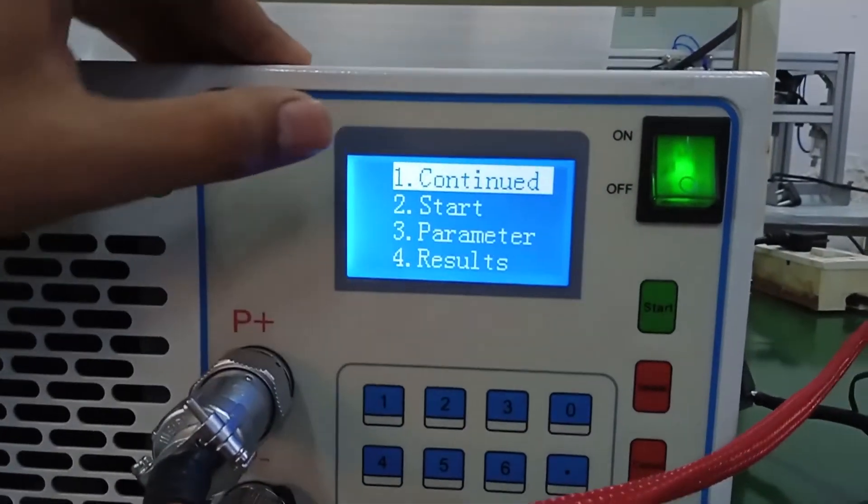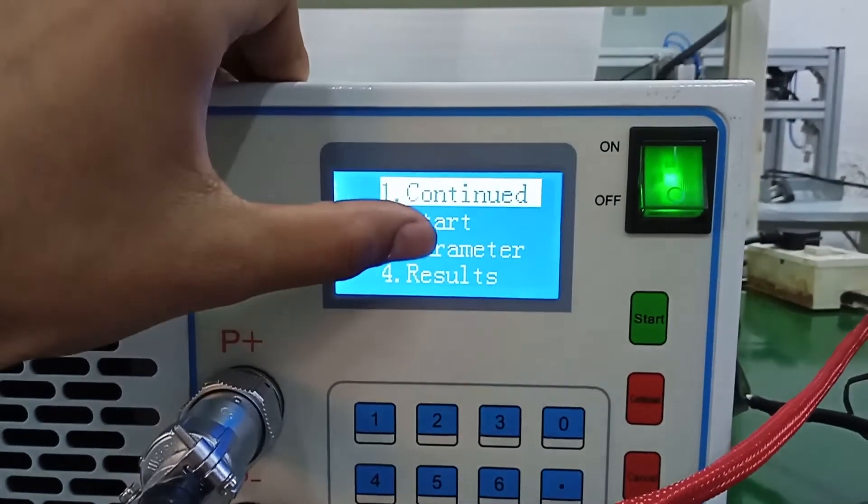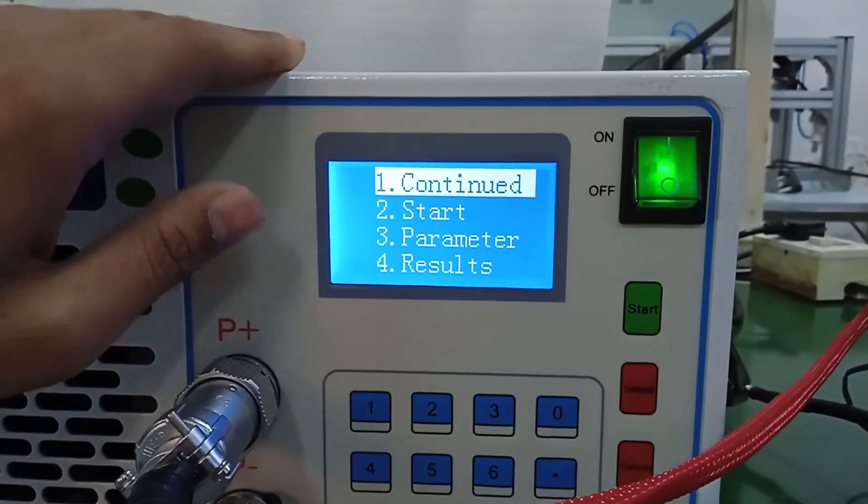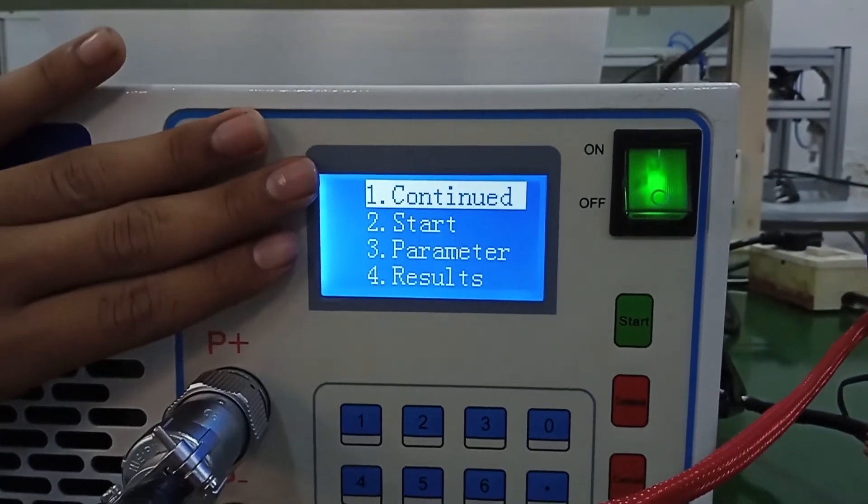Whenever you turn on your machine, you get four options: Continue, Start, Parameters and Result. Each and every function has different work. I will tell you shortly.